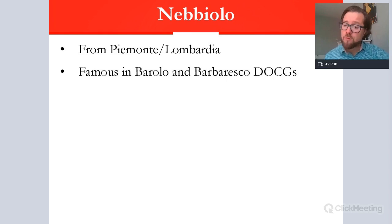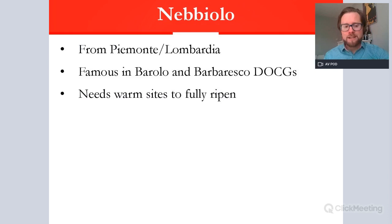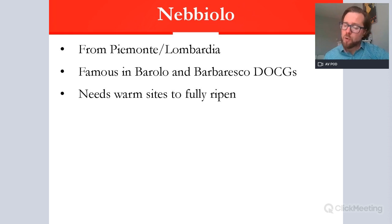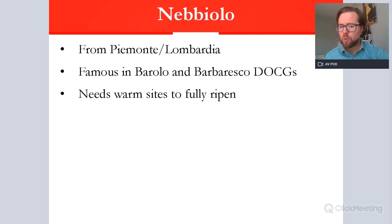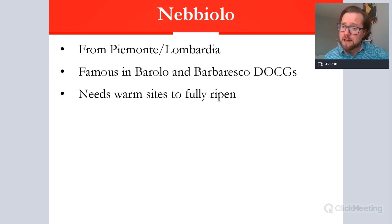These are two wines you really must know for your level two — there are lots of others but you only need to know these two. The variety is found on some of the best sites within Piemonte because it needs to ripen fully. It is quite an early budder and a late ripener, which means it has a longer growing season and therefore needs warmth. You will find it near places like Alba and Asti, in the Langhe and the Roero — the parts of Piemonte where we find Barolo and Barbaresco, on the best, often south-facing slopes.